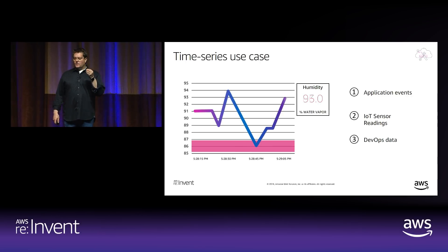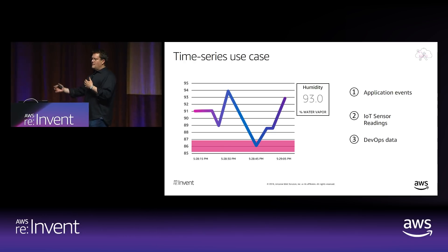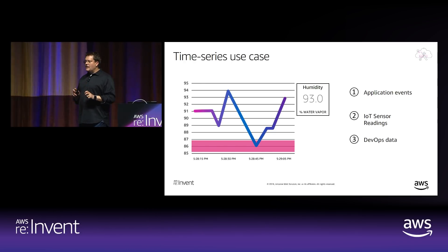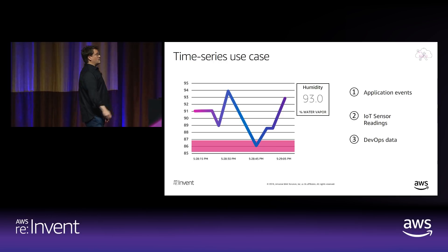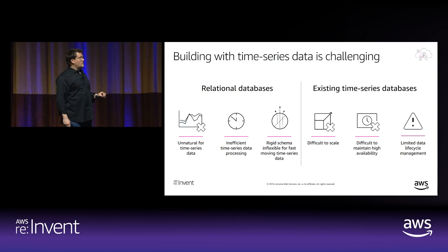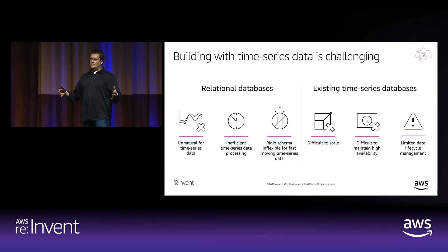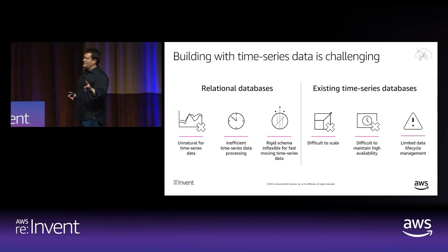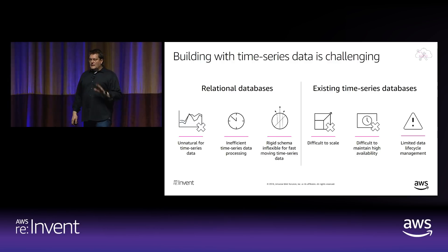There is a wide range of time series data use cases. Almost every customer I talk to, in one way or another, is asking: how do I analyze data as it changes over time? It's not just IoT sensors — it's also application events from heavily instrumented applications, DevOps data, and more. The challenges customers face when trying to build time series workloads: trying to do this in a relational database feels unnatural — you don't need a rigid schema, and you might have sensors on a robot where you want to collect certain attributes and change them on the fly without modeling everything upfront.